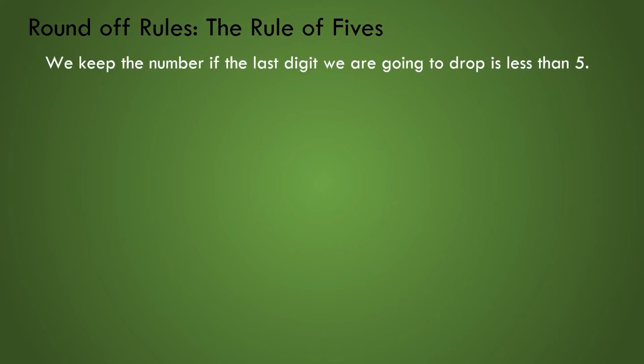You noticed that we had to round off values for most of our computations. So maybe we should review our round off rules. First, we keep the number if the last digit we are going to drop is less than 5. So if we want to round off 5.623 to the tenths place, we see that 0.023 is less than .050. So we keep the 6, rounding the number to 5.6.